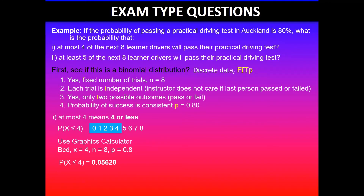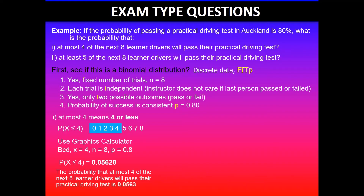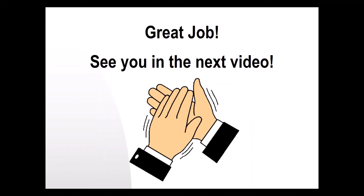Then we need to answer the question in context. The probability that at most four of the next eight learner drivers will pass their practical driving test is 0.0563, rounded to four decimal places. I'd suggest you pause the video and try this yourself to see if your answer matches. I'll do the second part to this problem in the next video. Thanks for watching — I'll see you in the next video.